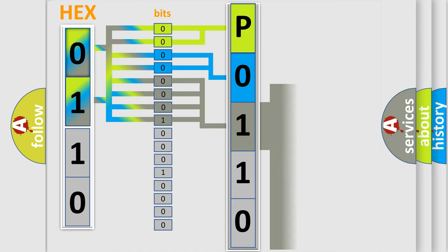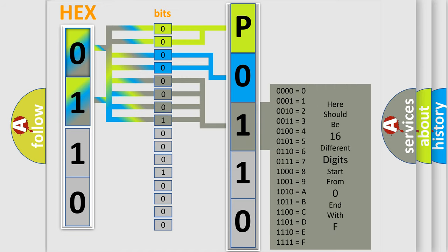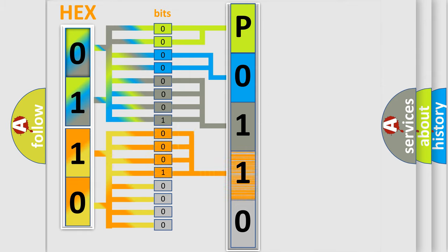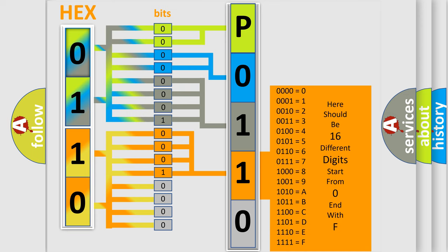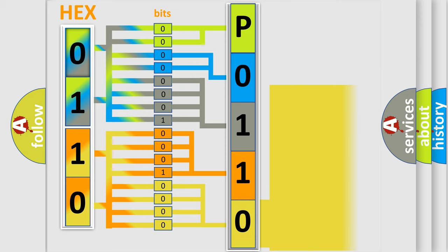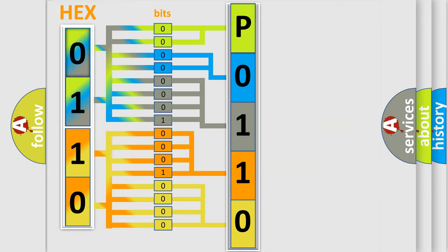The second byte is composed of a combination of eight bits. The first four bits determine the fourth character of the code, and the combination of the last four bits defines the fifth character. A single byte conceals 256 possible combinations. We now know how the diagnostic tool translates the received information into a more comprehensible format.